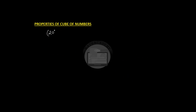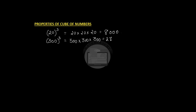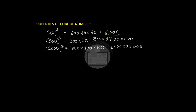Let us see another property of cube numbers. I do a cube of twenty: twenty times twenty times twenty gives eight thousand. I do a cube of three hundred: three hundred times three hundred times three hundred, which is twenty-seven followed by six zeros. I do a cube of a thousand: thousand times thousand times thousand. Whenever we have a cube number ending with zeros, the number of zeros will always be a multiple of three. In the first case we have three zeros, in the second case six zeros, in the third case nine zeros.